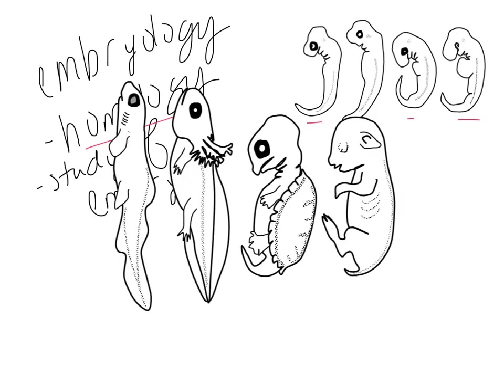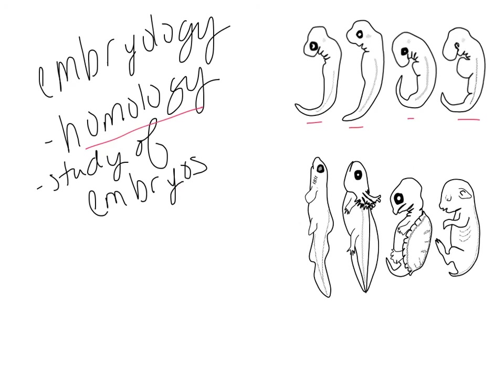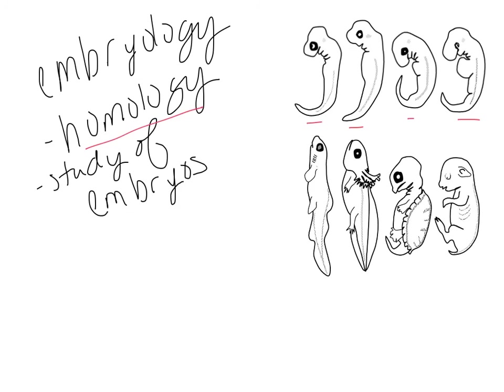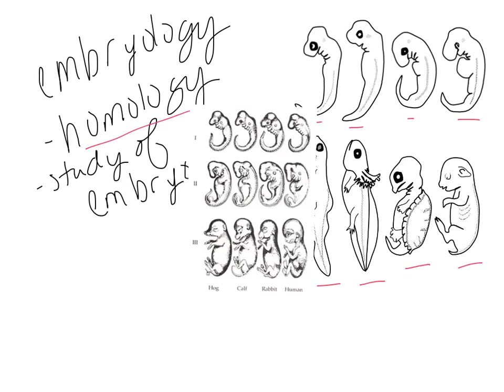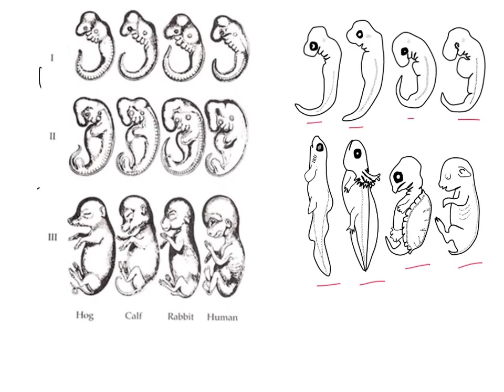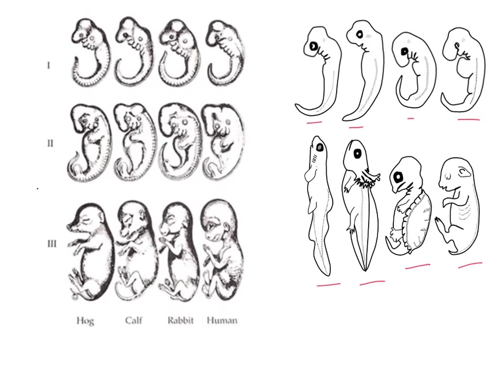If you look at them as they are further developed, you can see they end up being very different organisms — a fish, a tadpole, a turtle, and a pig. This again shows a link back to a common ancestor. If the embryos are similar, it shows the DNA has got to be similar. This other example includes a human embryo, which looks very similar in those early stages to the hog, the calf, and the rabbit embryo.